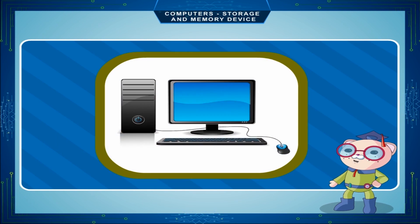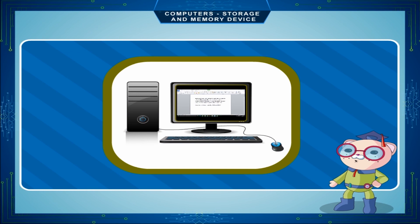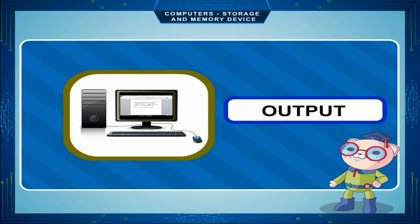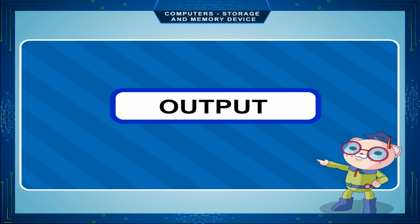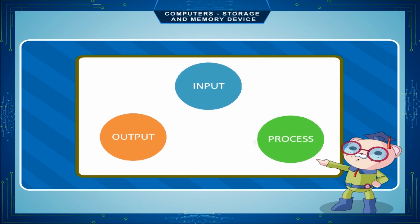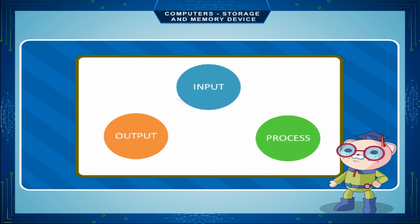We input data and instructions into the computer. It processes according to our instructions and produces meaningful information called output. This output can again be input for further processing, and this becomes a cycle.